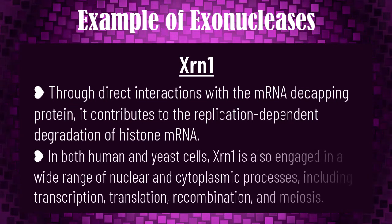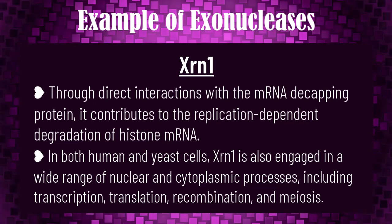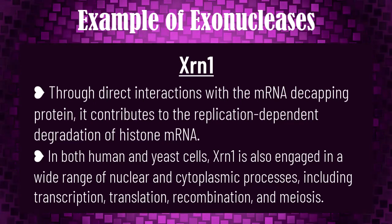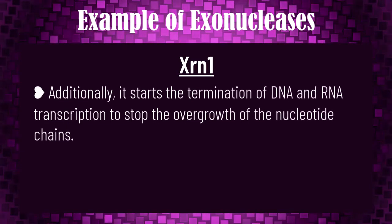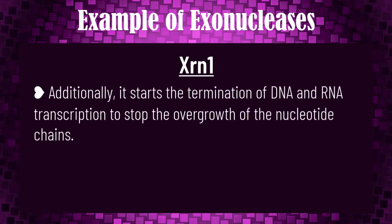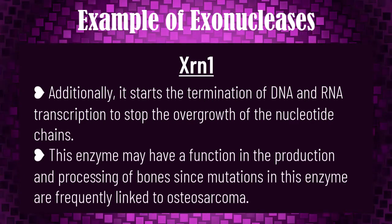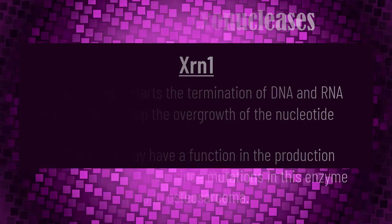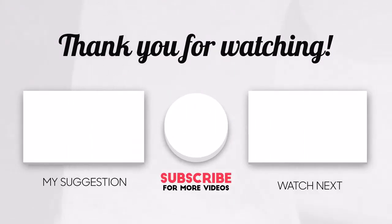XRN1 is also engaged in a wide range of nuclear and cytoplasmic processes including transcription, translation, recombination, and meiosis. Additionally, it starts the termination of DNA and RNA transcription to stop the overgrowth of nucleotide chains. This enzyme may have a function in the production and processing of bones, since mutations in these enzymes are frequently linked to osteosarcoma.